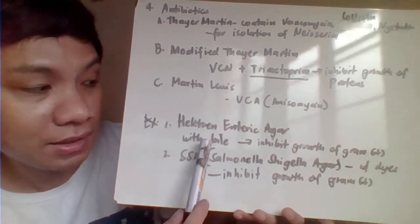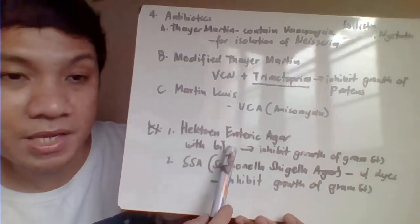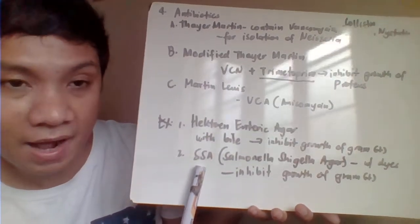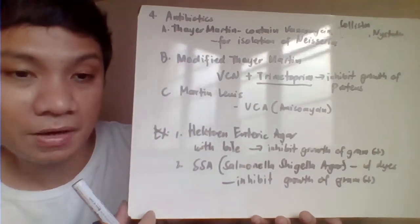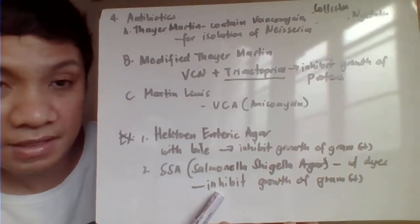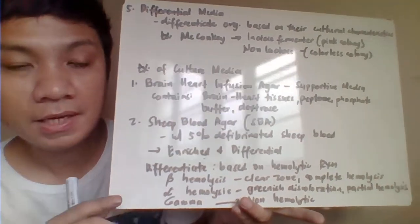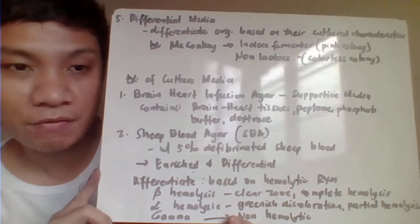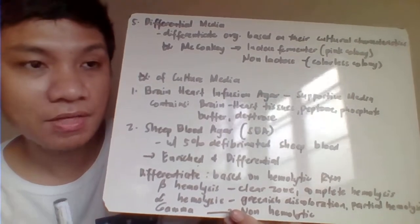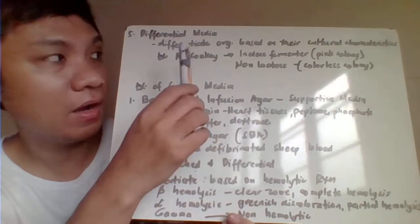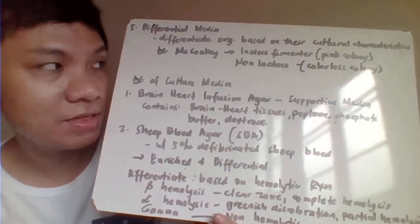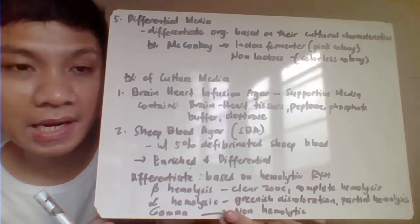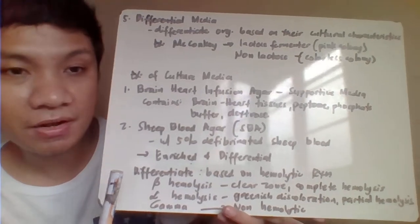Examples of enriched and selective media include Hektoen Enteric Agar, which contains bile salts that inhibit gram-positive organisms, allowing only gram-negative organisms like Salmonella and Shigella to grow. Salmonella-Shigella agar also contains dyes inhibitory to gram-positive organisms. Differential culture media differentiates colony types according to their characteristics — for example, MacConkey agar differentiates lactose fermenters producing pink colonies from non-lactose fermenters producing colorless colonies.